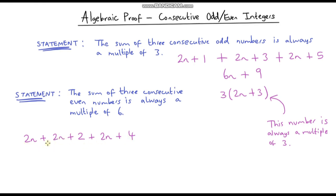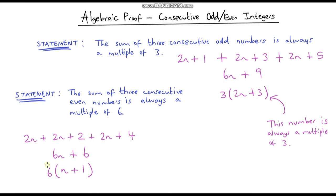Let's add all three even numbers together. 2n + 2n is 4n, and 4n + 2n is 6n. Adding the constants: 2 + 4 gives us 6. So we get 6n + 6. Is this a multiple of 6? Yes — we can factor out a 6: 6n divided by 6 is n, and 6 divided by 6 is 1, giving 6(n + 1). As soon as we multiply by 6 this is a multiple of 6.